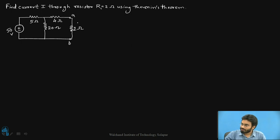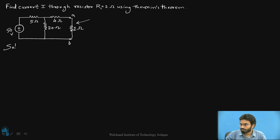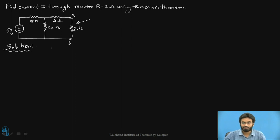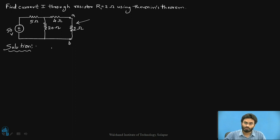We are supposed to identify the Thevenin's equivalent circuit across this particular network. Basically we have three steps: the first step is to identify the Thevenin's voltage VTH, then we calculate the Thevenin's resistance RTH, and finally in step 3 we draw the Thevenin's equivalent circuit and identify the current across the 2 ohm resistor or the voltage across whatever is desired in the question.